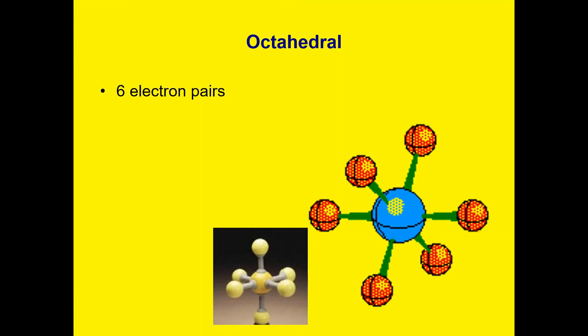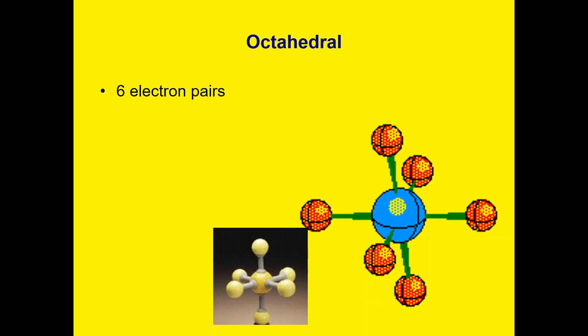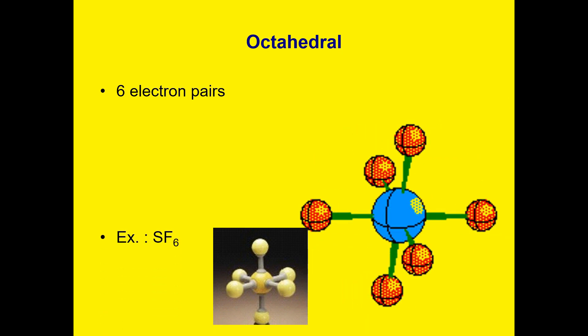Lastly, the octahedral has six electron pairs. Example is sulfur bonded with fluorine. A bond angle of 90 degrees.